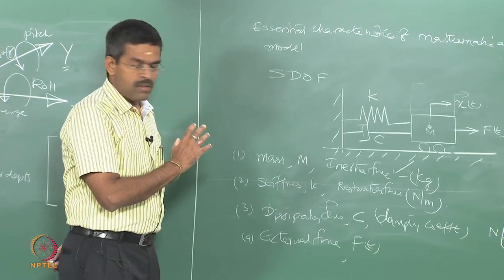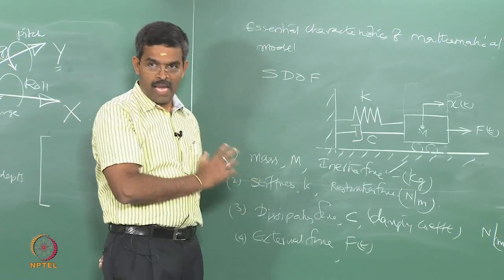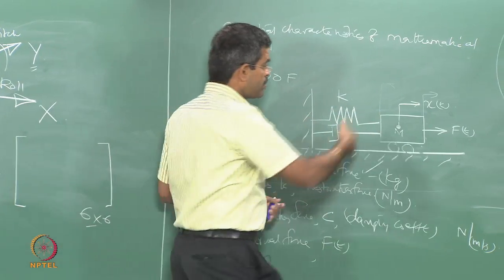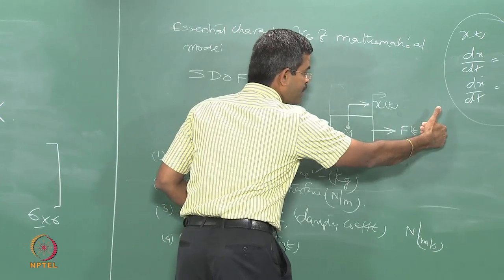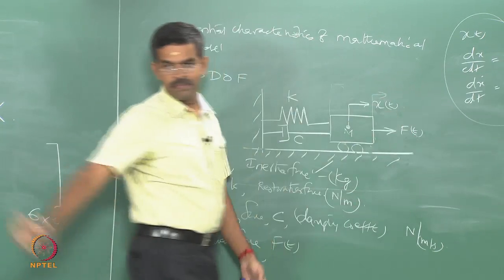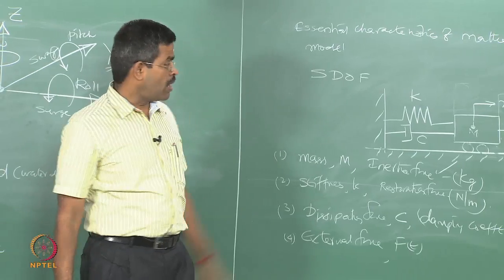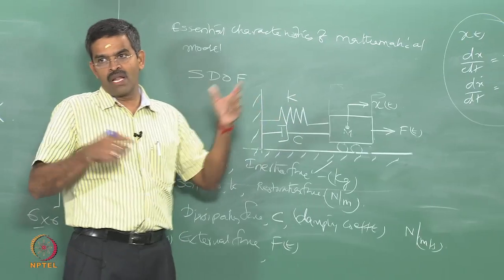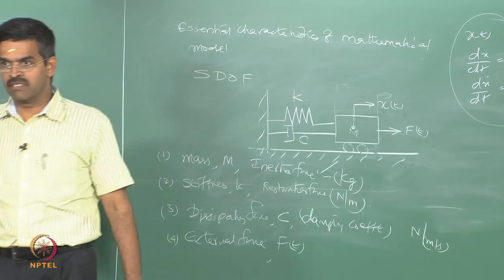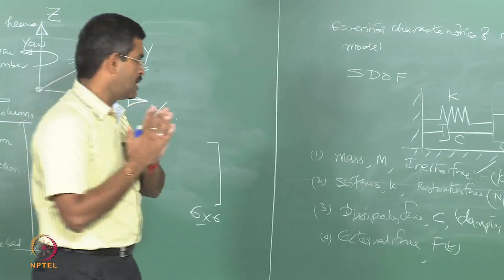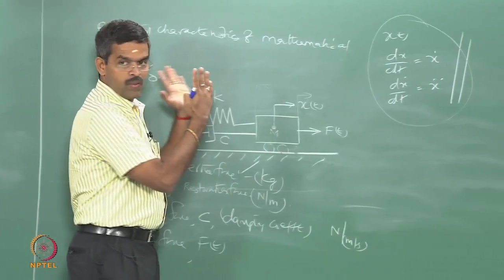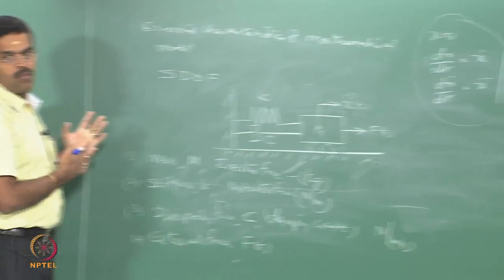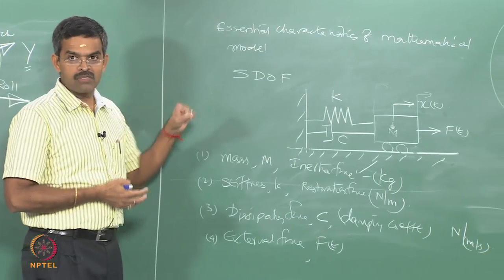Imagine the mass is present all over the medium — along the length, height, and volume continuously. Then mass itself depends on x, y, z parameters and at every point you have six degrees of freedom, giving an infinite number of complications. To control this, people said: let us lump the mass at one point, assume the mass moves in only one degree of freedom, and then see what would be the dynamic response analysis of such systems.